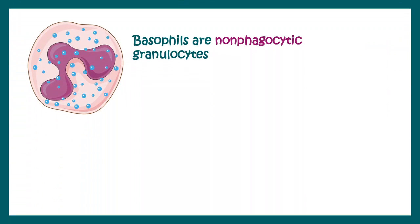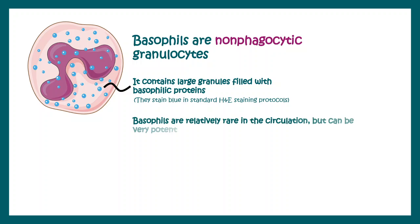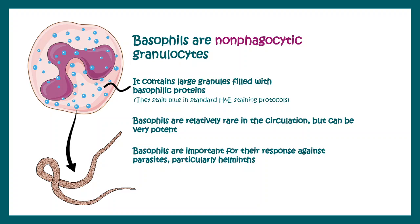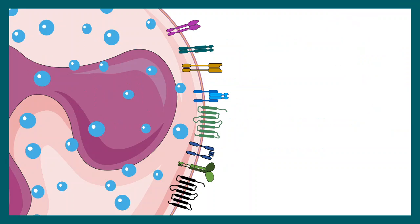Basophils are non-phagocytic and contain several basophilic granules, which are stained bluish or purplish in H&E staining. Basophils are relatively rare, but they are very potent in terms of their action. Basophils are mostly important for their response against parasites such as helminths. This is how the basophil looks in a microscope in a blood smear — we can see all the granules as these violet dots, which kind of obscure the nuclear view.